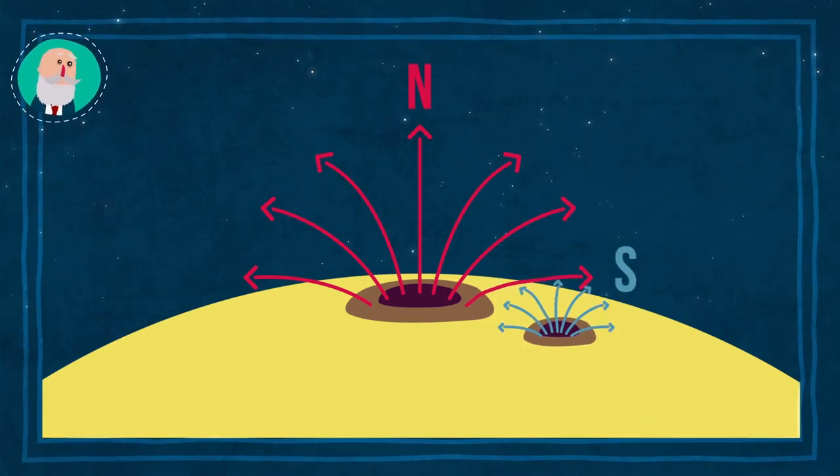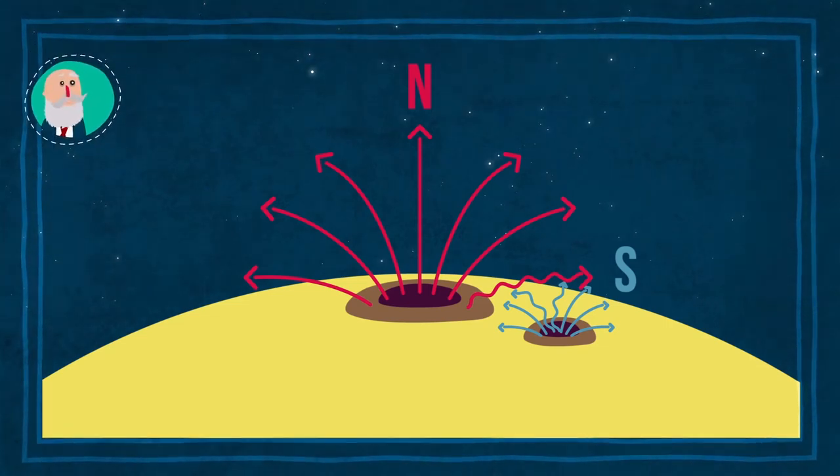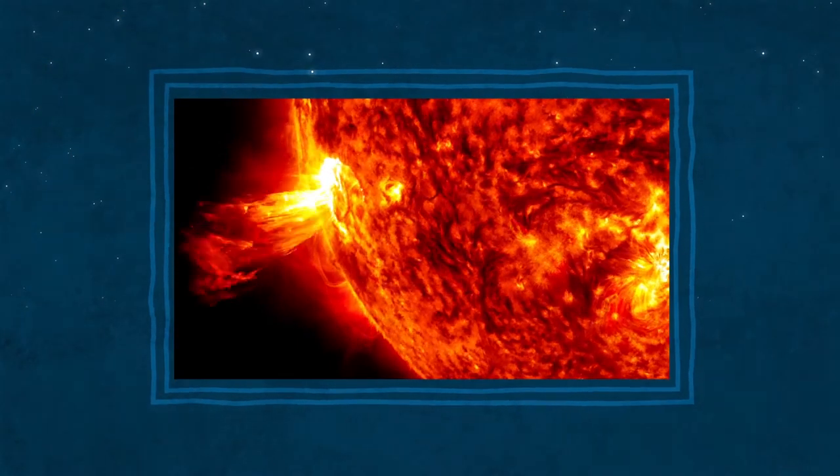Cuando estos campos se recombinan, liberan gran cantidad de energía, radiación y partículas, produciendo las llamadas fulguraciones solares.